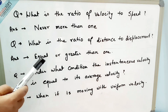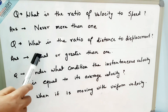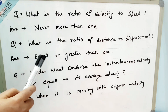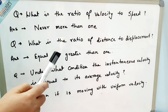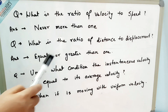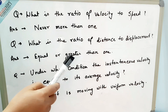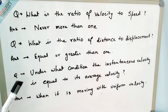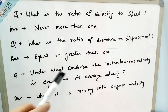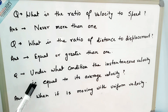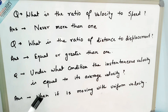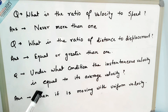In the case of a straight line, when a body travels from A to B, distance and displacement are both the same, so the ratio is 1. The next question is: under what condition is instantaneous velocity equal to average velocity? The answer is when an object is moving with uniform velocity, its instantaneous velocity equals its average velocity.